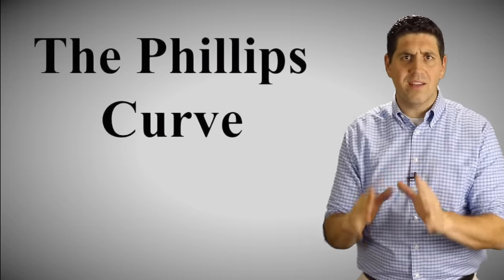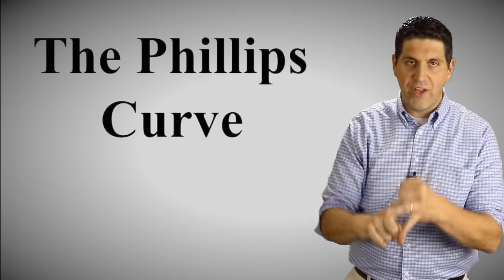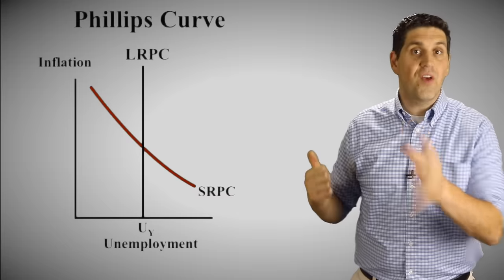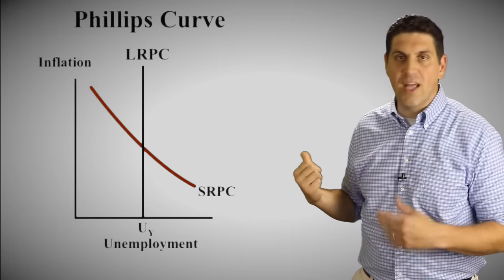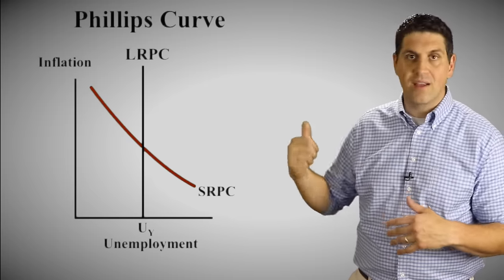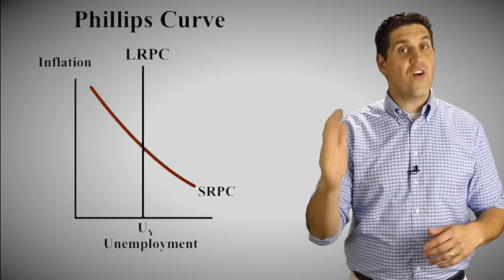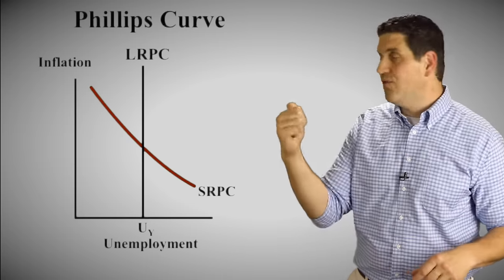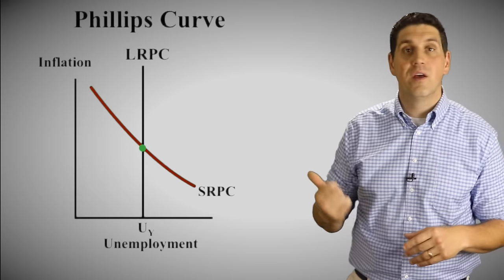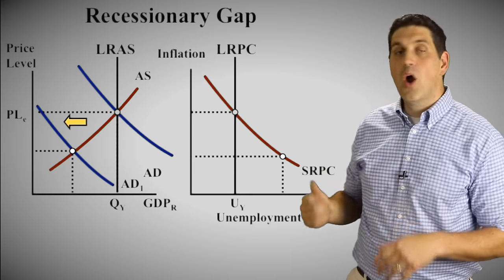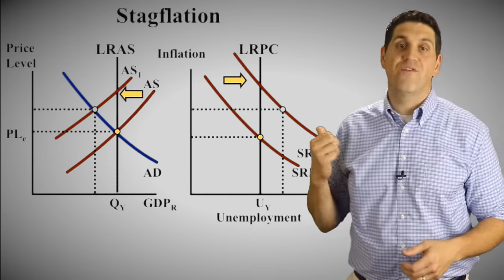There's another graph you need to show recessionary gap, inflationary gap, and full employment: the Phillips curve. The Phillips curve shows the relationship between inflation and unemployment. In the short run, there's a downward-sloping relationship — either you get high inflation or high unemployment, but usually not both at the same time. In the long run, it's vertical — no relationship between inflation and unemployment. With these two graphs, you should be able to show when the economy is at full employment, has an inflationary gap, has a recessionary gap, or when a shift in the short-run supply curve shifts the short-run Phillips curve.